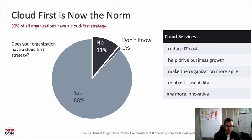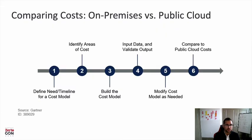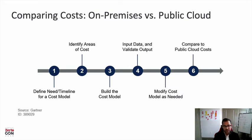As an organization, when you decide to move to the cloud specifically for disaster recovery, you need a solid decision-making process. You need to understand why you're moving to the cloud, because once you understand why, you'll be able to make much more logical decisions. The first step is to build out a timeline and a model to compare the cost of your current on-premise solution versus using a public cloud like Microsoft Azure as your DR target site. Define your need, understand why you're doing it and when you want to implement, identify all cost areas, build an appropriate model, validate and modify that data, then compare it to Microsoft Azure.